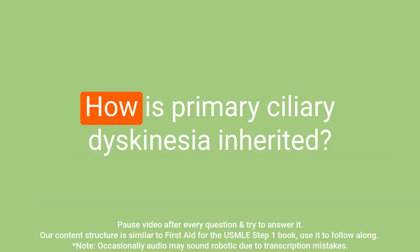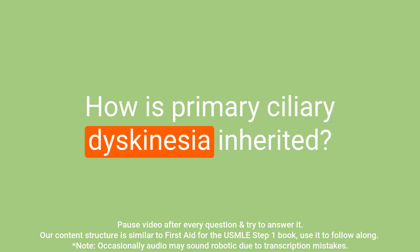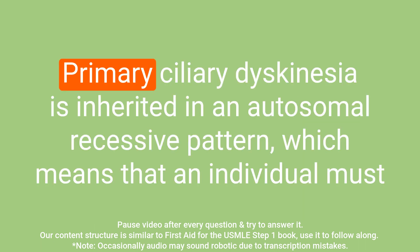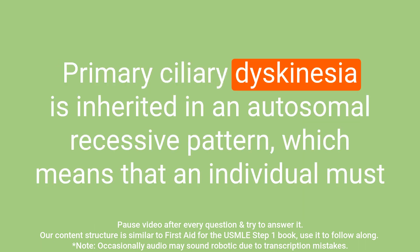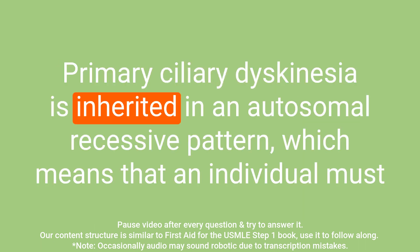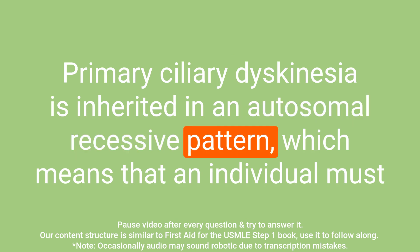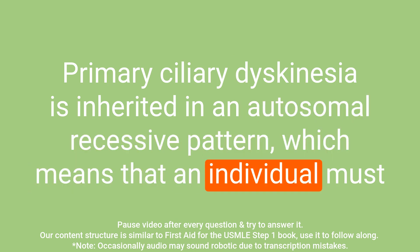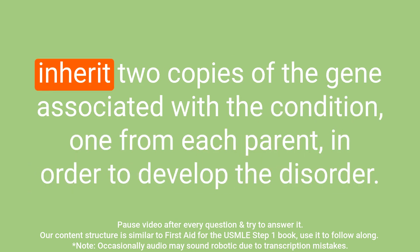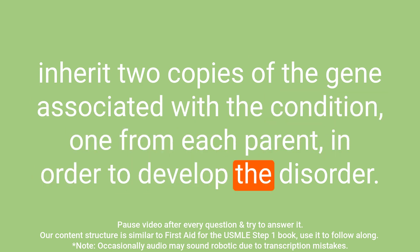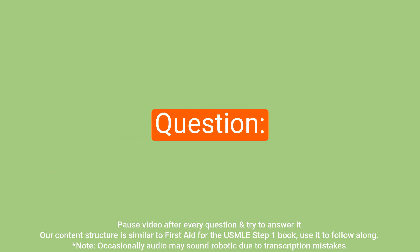Question: How is primary ciliary dyskinesia inherited? Answer: Primary ciliary dyskinesia is inherited in an autosomal recessive pattern, which means that an individual must inherit two copies of the associated gene — one from each parent — in order to develop the disorder.